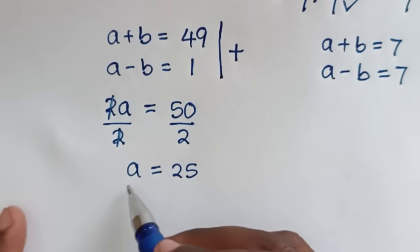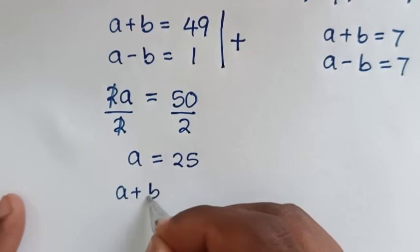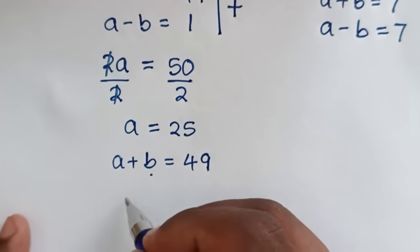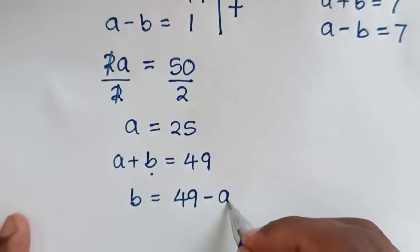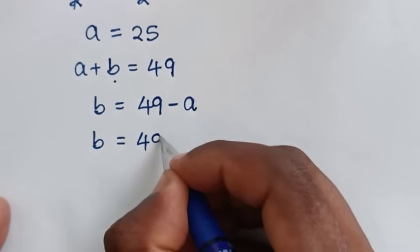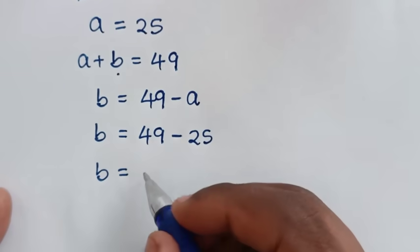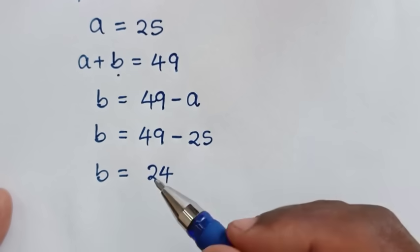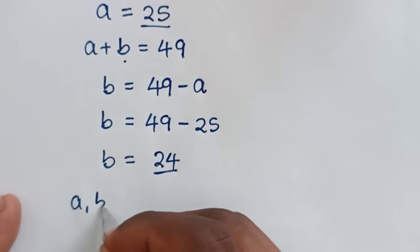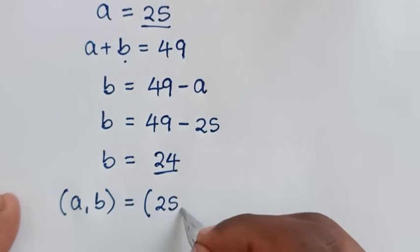Now we have the value of a. To get the value of b from the first equation, a plus b equals 49. We take a to the other side, so b equals 49 minus a, which is 49 minus 25. Therefore b is equal to 24. So a equals 25 and b equals 24.